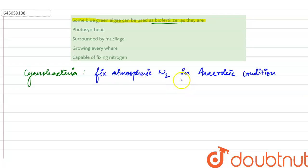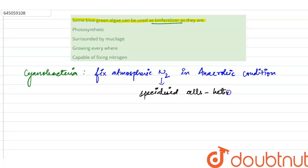They are able to fix atmospheric nitrogen because they have specialized cells known as heterocysts. Now, N₂ cannot be directly absorbed by plants — nitrogen cannot be directly absorbed by plants.